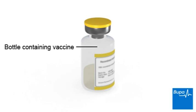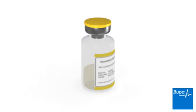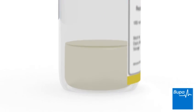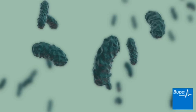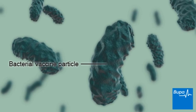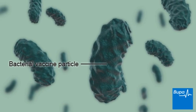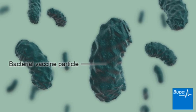This animation will focus on how a vaccine prevents a disease caused by bacteria. Bacterial vaccines are made up of bacterial particles that have been killed or inactivated so that they can't cause an infection.